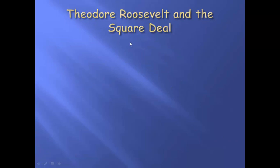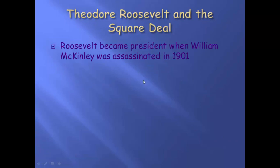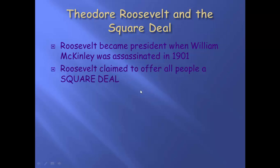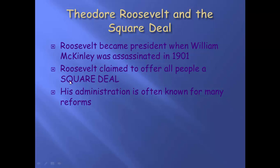First of all, his slogan is the Square Deal. Roosevelt only became president when William McKinley was assassinated in Buffalo, New York in 1901 during the Pan American Exposition. Roosevelt claimed to offer people a square deal — it's nice and even. He was going to take care of employees, employers, corporations, consumers, and children. He's going to offer everybody a fair shake, or a square deal as he called it.